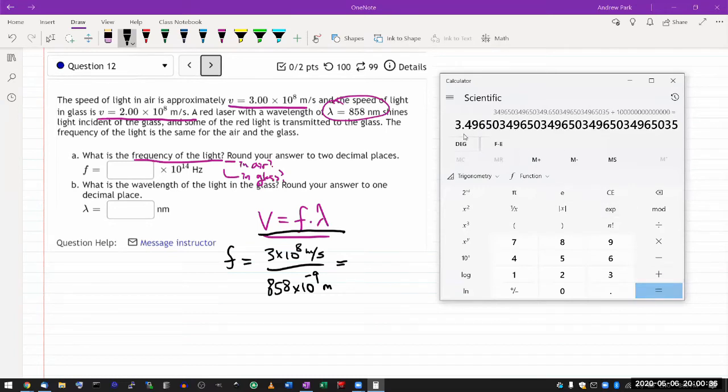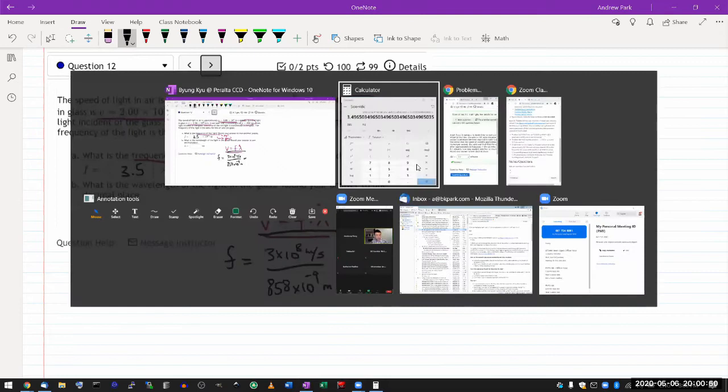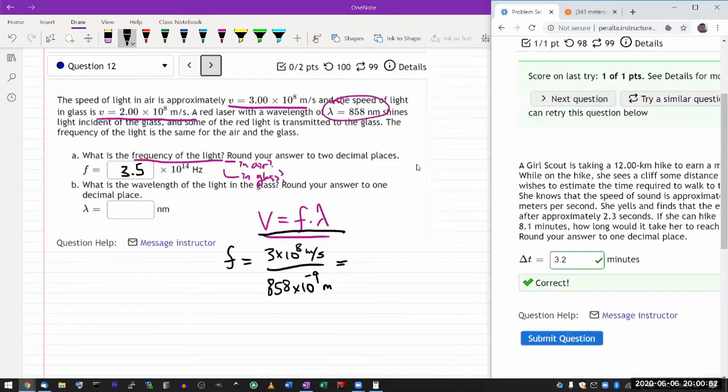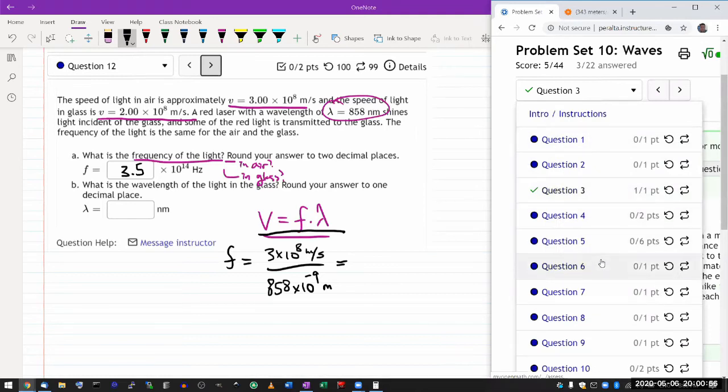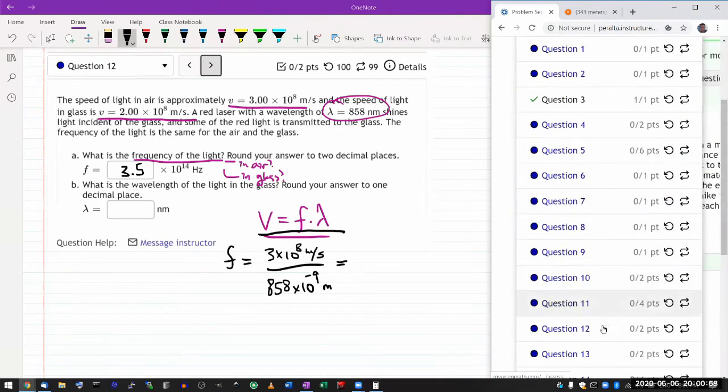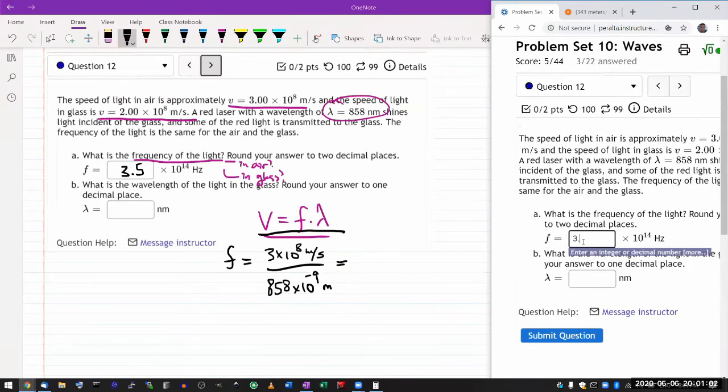Okay, 3.49, whatever. So 3.5. So that's what I get: the frequency of the light in air is 3.5 times 10 to the 14 Hertz. Let me plug that in. Make sure I got the right answer on part A, and then we'll answer part B.